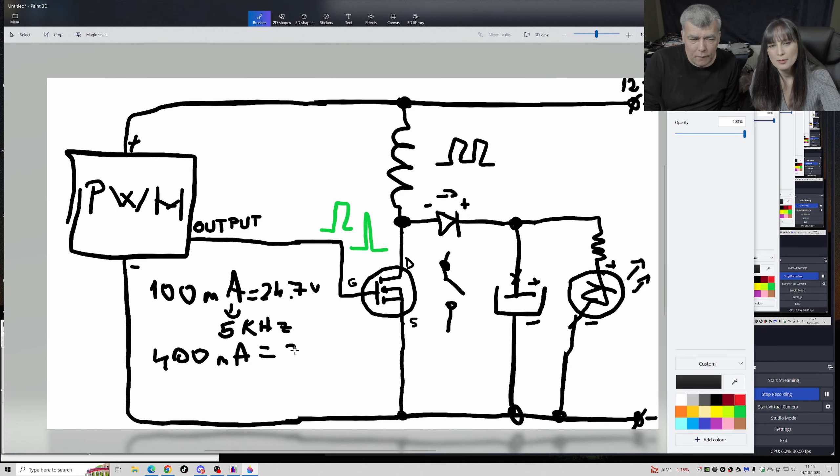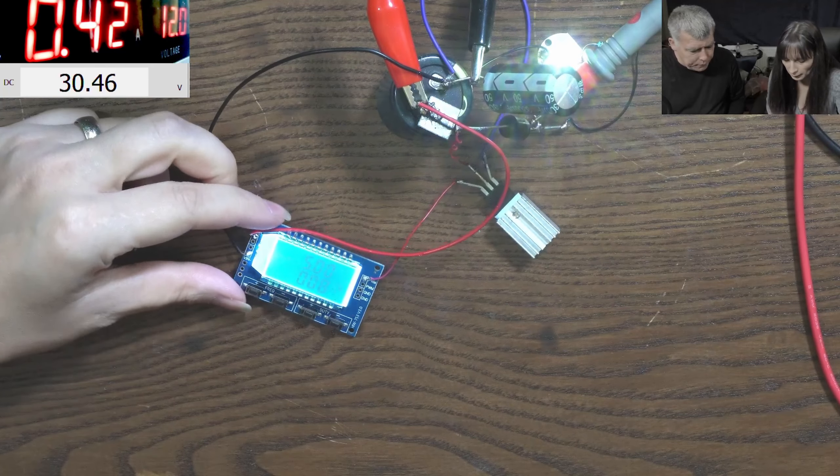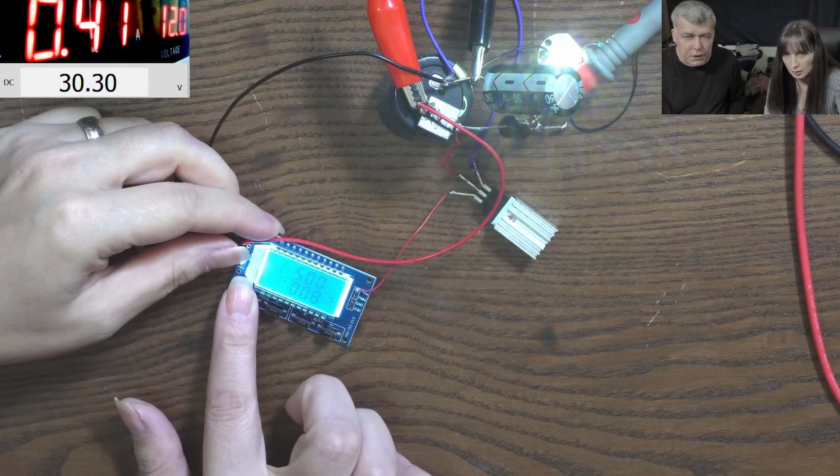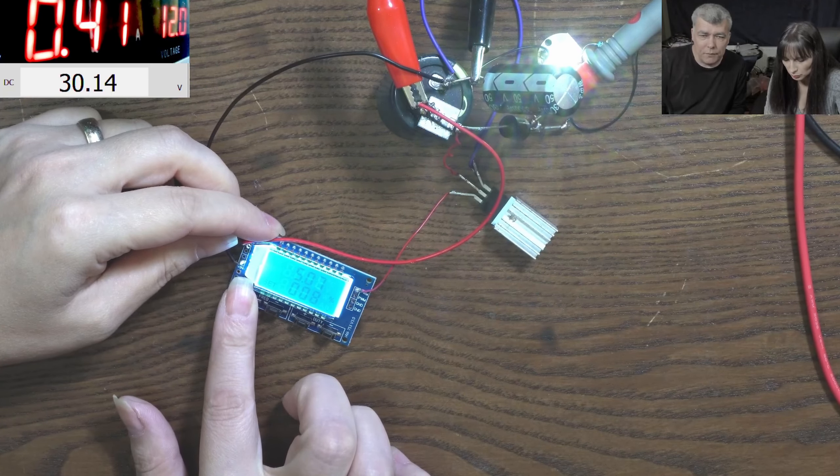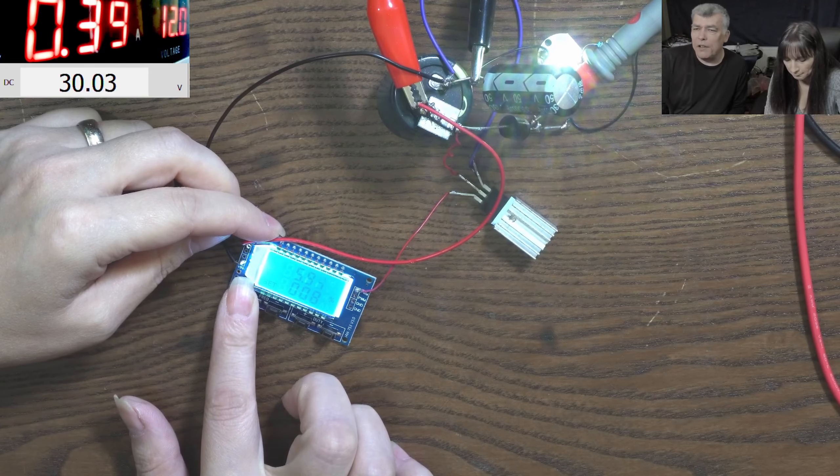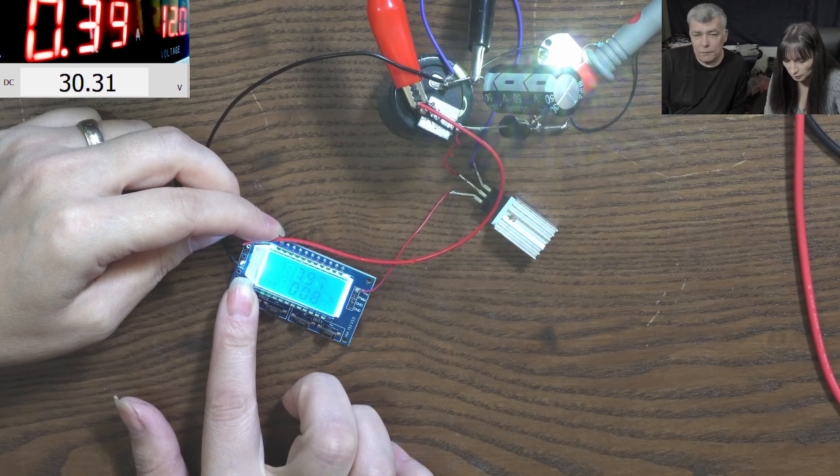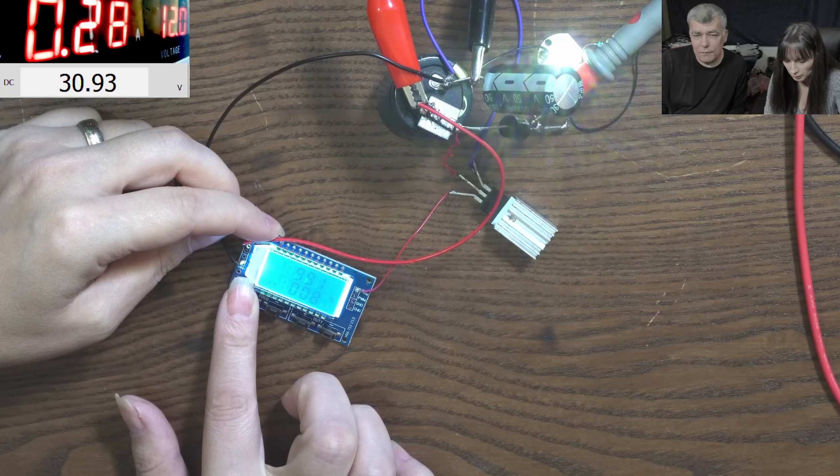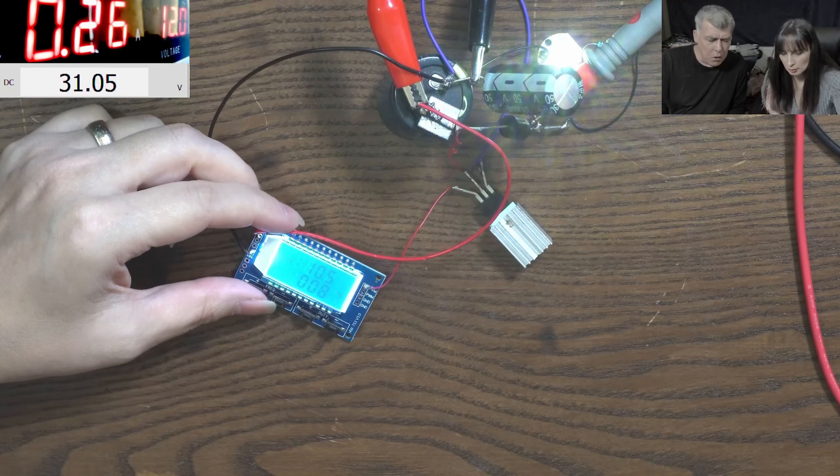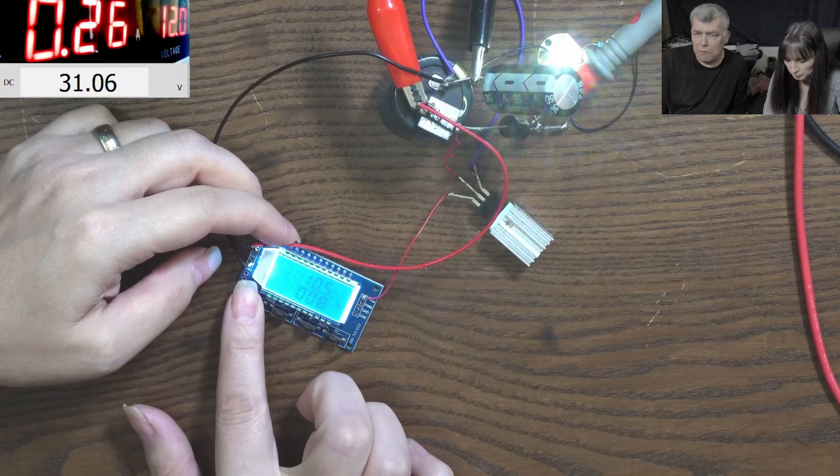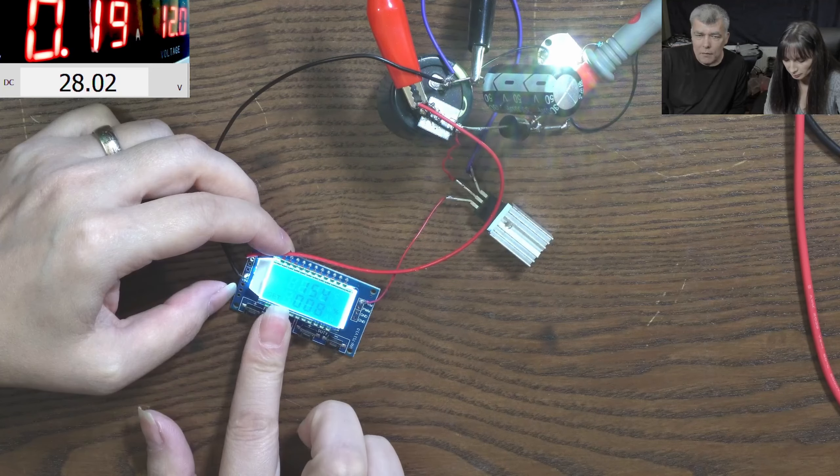So we increased the current so many times and actually the voltage didn't increase too much. You can see? I want you to increase the frequency now. Leave the duty cycle and increase the frequency. Go over 10k, go more. Like 15 kilohertz.